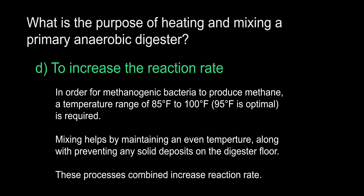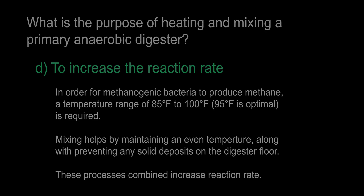The answer is D, to increase the reaction rate. Proper heating and mixing is vital to increasing the biological reaction rate of a primary anaerobic digester. The digester should be heated and kept at 95 degrees Fahrenheit. The distribution of heat is further improved by mixing the contents, along with preventing solids from depositing on the floor, which decreases the total volume within the digester.